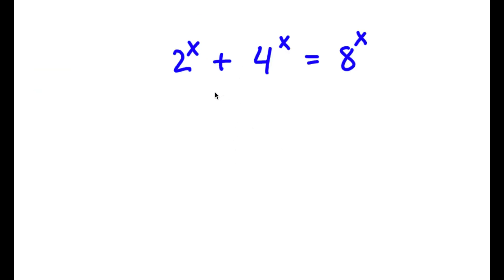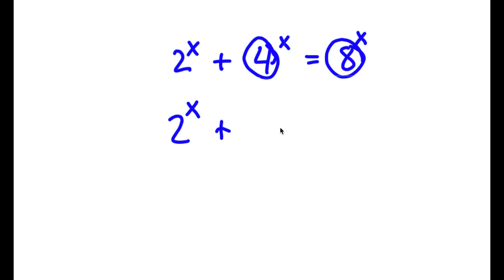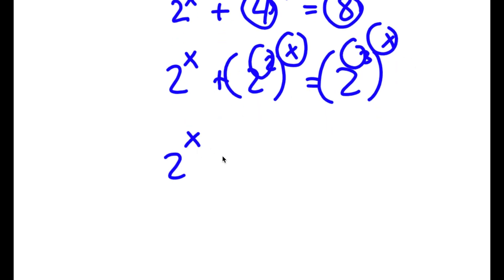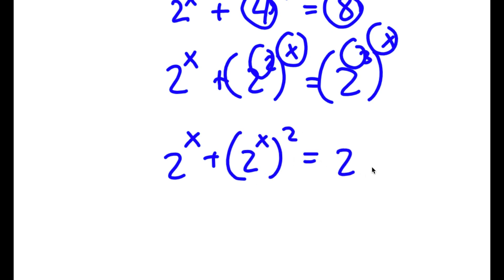All right, so in this problem I have 2 to the power of x plus 4 to the power of x is equal to 8 to the power of x. I'm going to first start by rewriting 4 as 2 squared and 8 as 2 to the power of 3. So now I have 2 to the power of x plus 2 squared to the power of x is equal to 2 to the power of 3 to the power of x. Now I can switch the places of these two exponents, so I get 2 to the power of x plus 2 to the power of 2x is equal to 2 to the power of 3x.